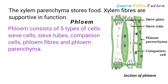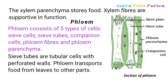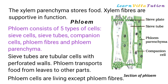Phloem consists of five types of cells: sieve cells, sieve tubes, companion cells, phloem fibers, and phloem parenchyma. Sieve tubes are tubular cells with perforated walls. Phloem transports food from leaves to other parts of the plant. Phloem cells are living, except phloem fibers.